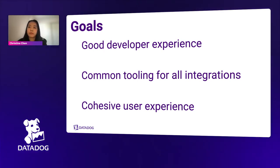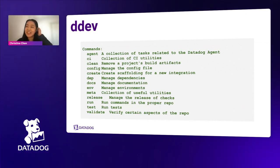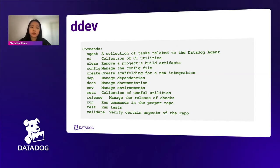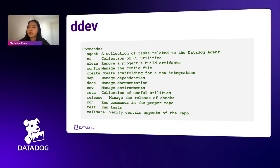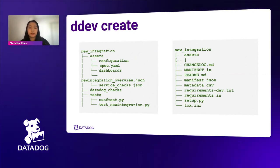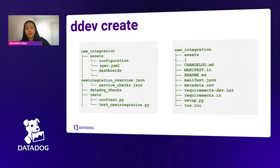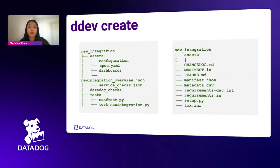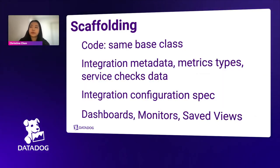The DDEV create command allows contributors to easily start developing by providing scaffolding for different types of integration. Our classic integration includes a Python class and you can start developing from that. We also provide different types like tile-only or logs-only. The scaffolding provides the check class, which you can start developing for metric collection. We also provide integration metadata — documentation for metrics which describes the metrics collected by the integration, visible in the integration tile tab as well as in the public-facing documentation. This is where we maintain the metric names, types, descriptions, and units.